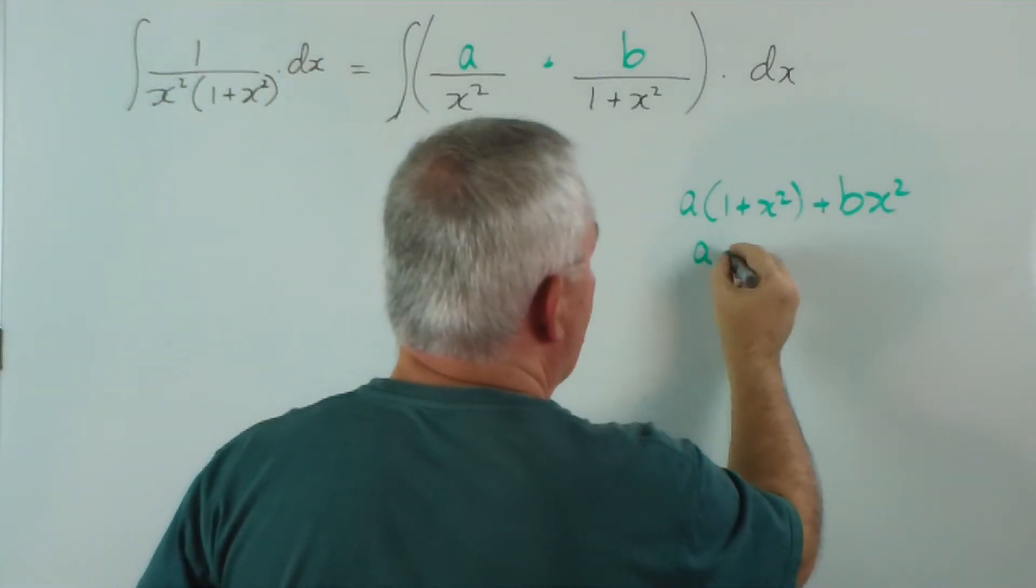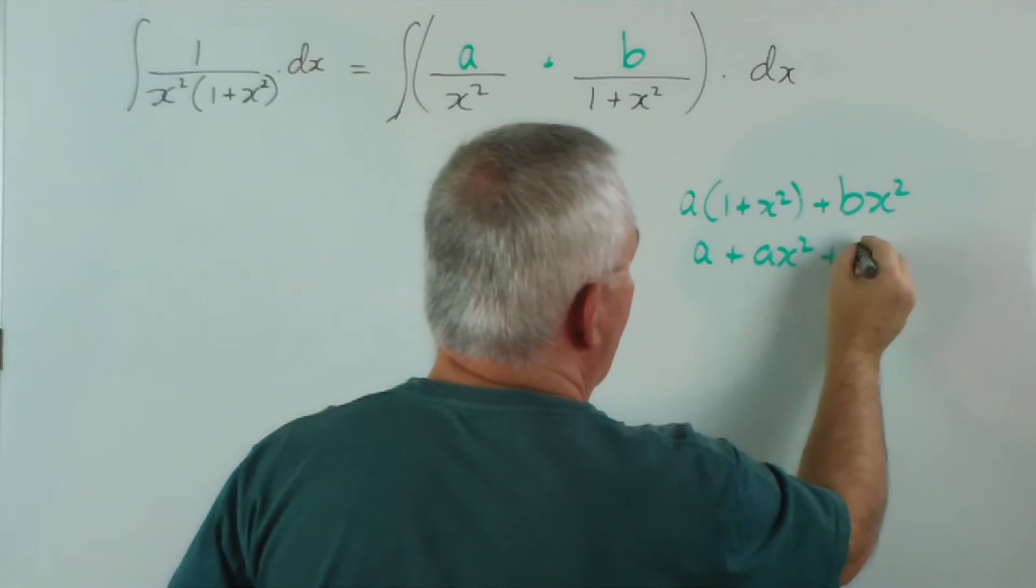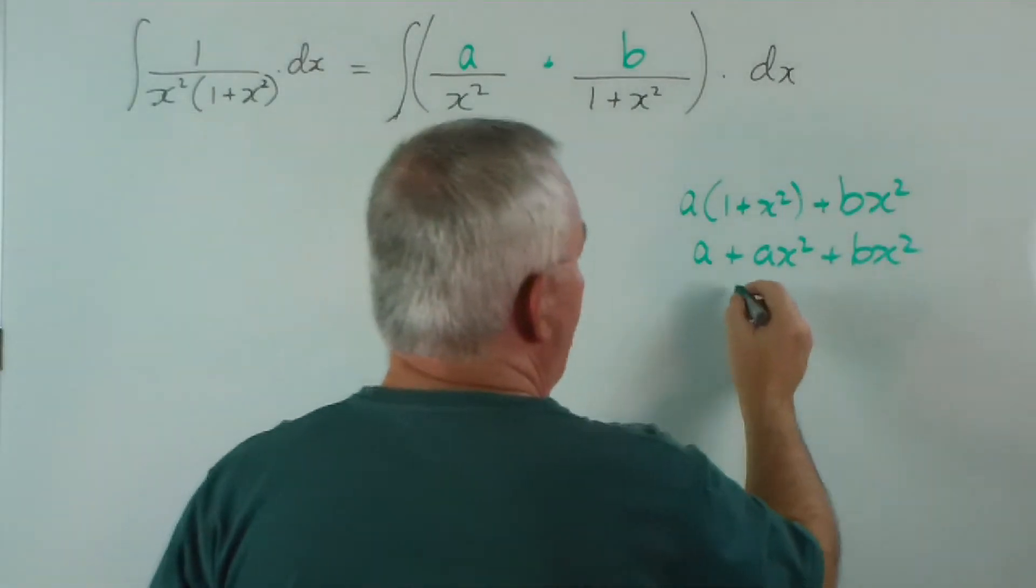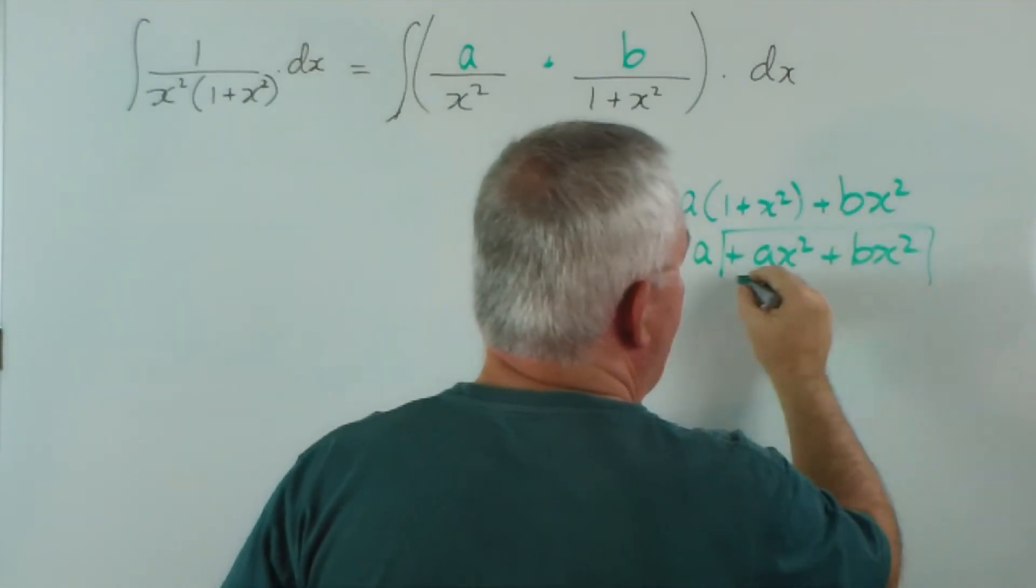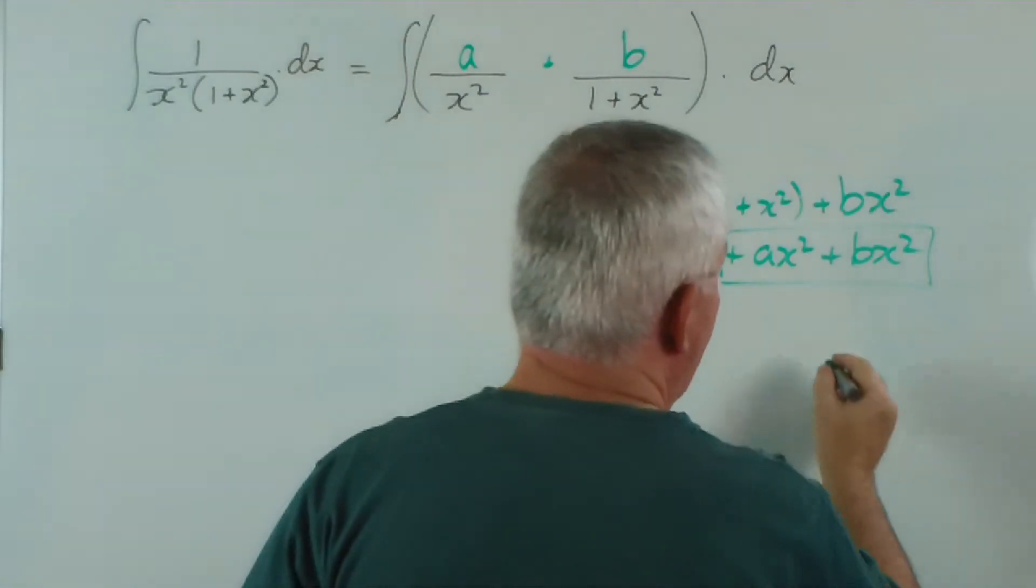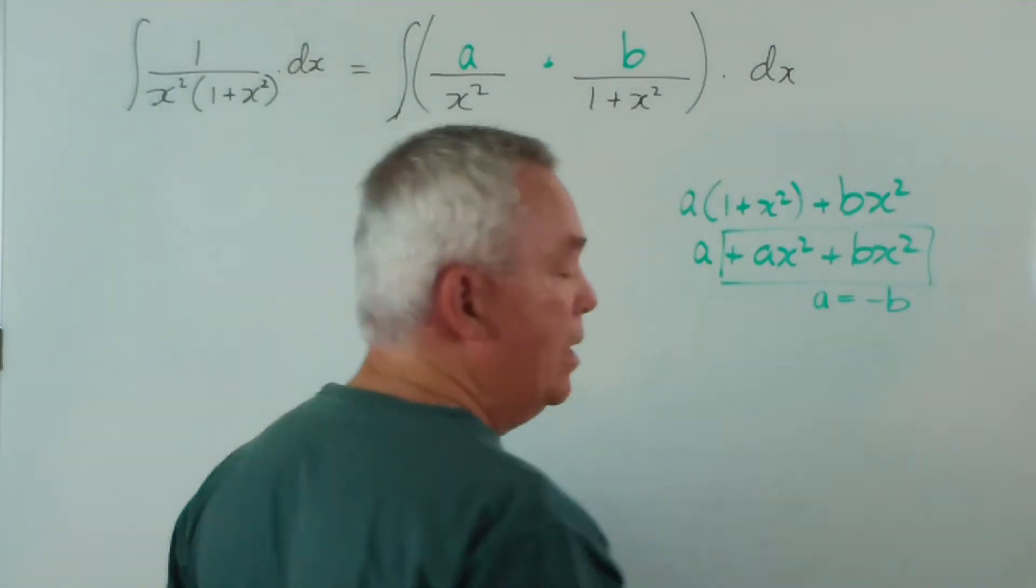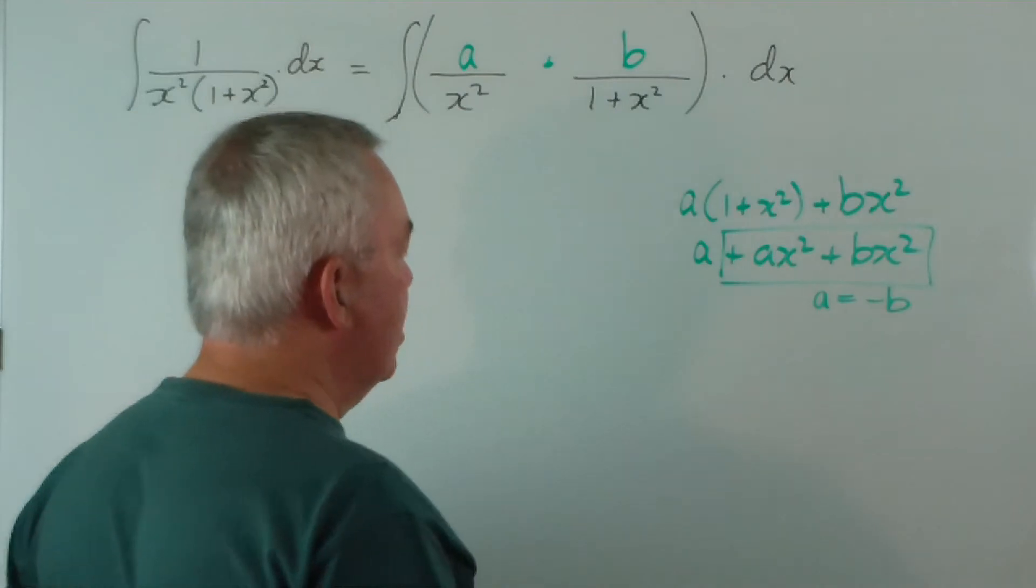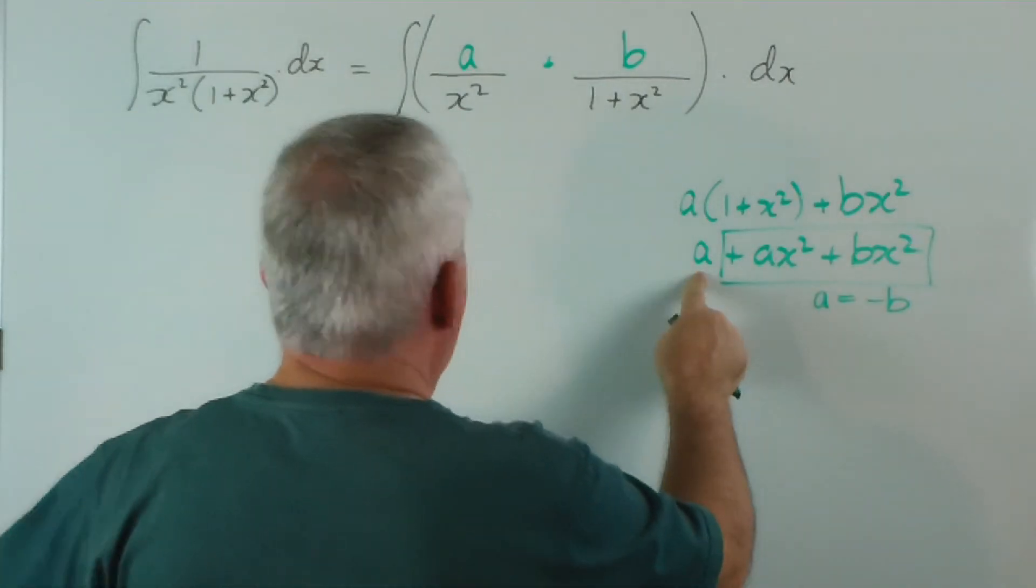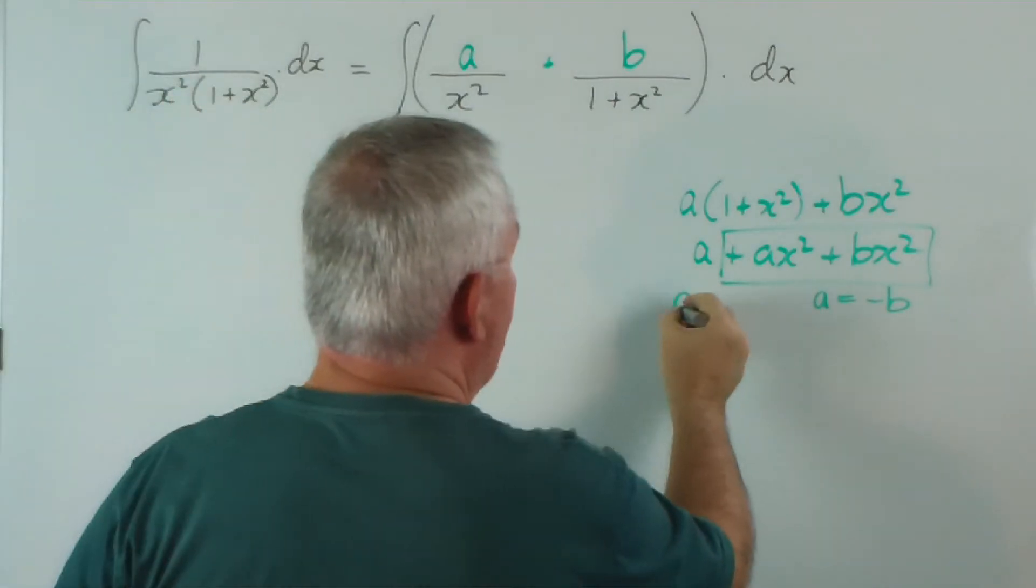So what do we get? We get a plus ax squared plus bx squared. Well, they're our x squared terms and we want that to equal zero. So we want a to be the exact opposite of b. Or b to be the exact opposite of a. So that they work out as zero. And for this to be 1, a must equal 1.